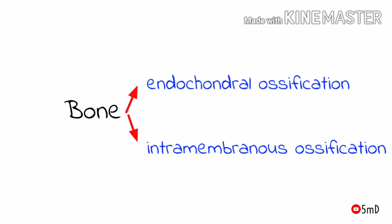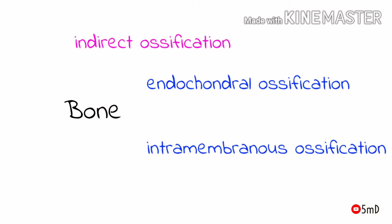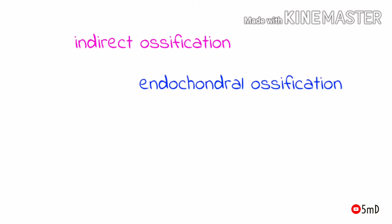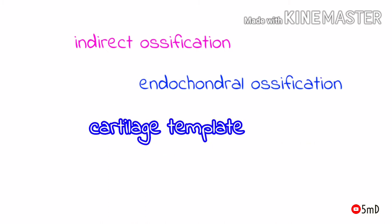Basically, there are two mechanisms by which bone is formed in our body: either through endochondral ossification or intramembranous ossification. Endochondral ossification is also known as indirect ossification because first a cartilage template is formed, which is then converted to bone.